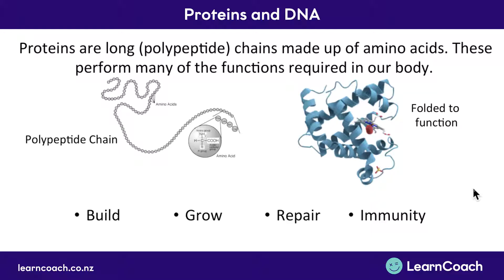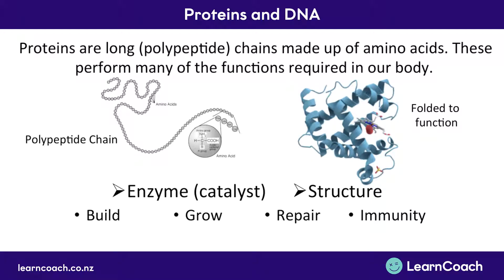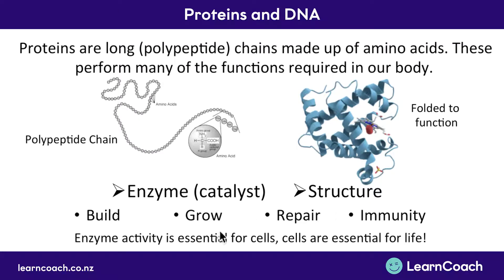It's called folded to function, and if it unfolds it stuffs up. The general uses of proteins are to build things, help us grow, repair things, and immunity — they help fight infection. But the major things that will come up again and again are that they are enzymes — they make reactions go faster and bring things together. If the structure of an enzyme or protein changes, things will go wrong in our bodies. Enzyme activity is essential for cells, and cells are obviously essential for life.